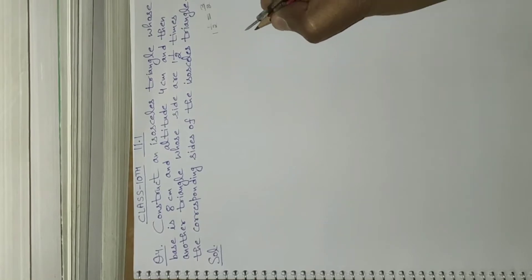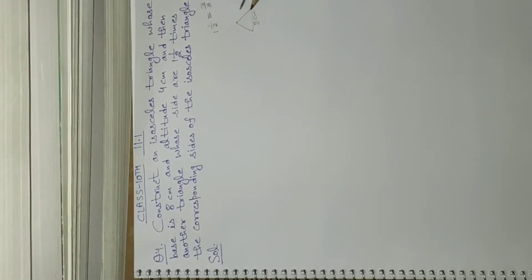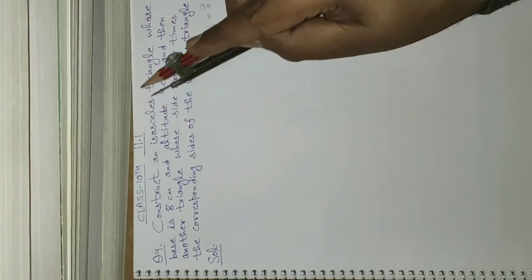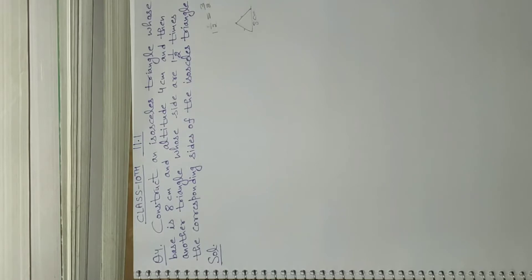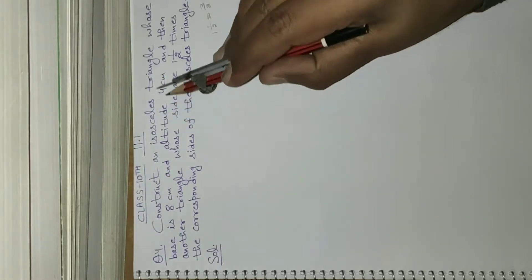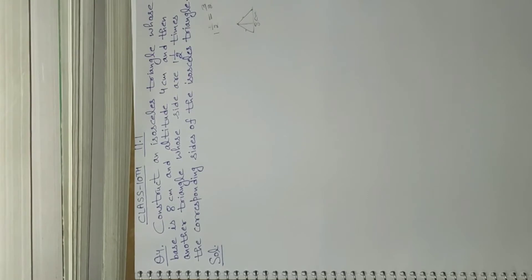We shall take the base of our isosceles triangle as 8 centimeters and make two equal sides. In an isosceles triangle, two sides of the triangle are equal. We have to make the altitude 4 centimeters, and we want to construct another triangle whose sides are 3 by 2 times the corresponding sides of this isosceles triangle.